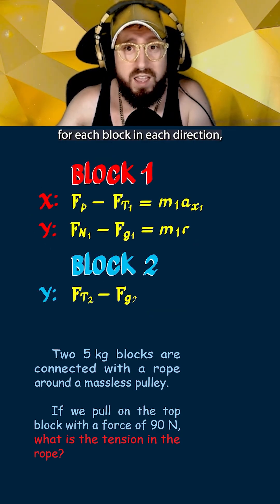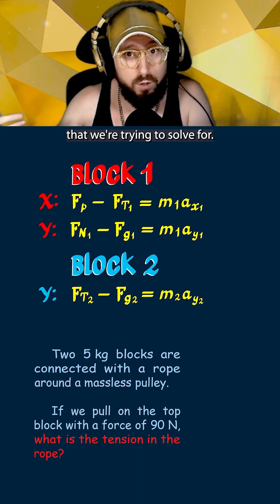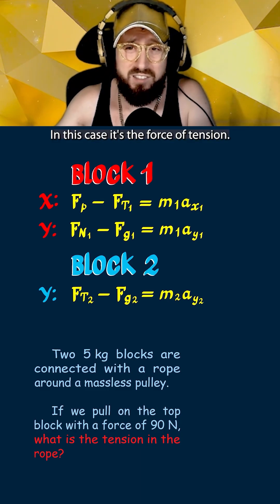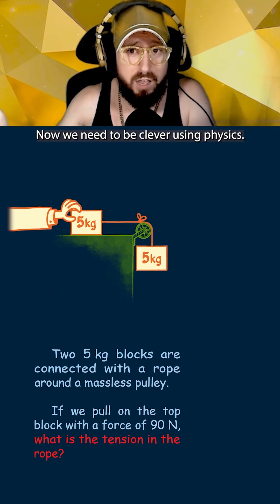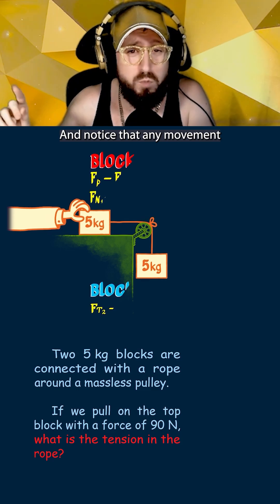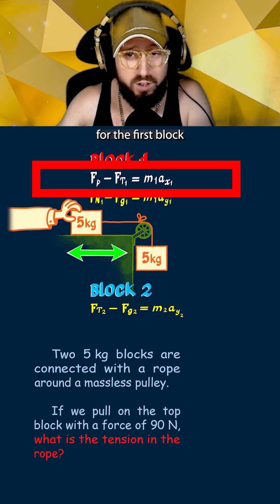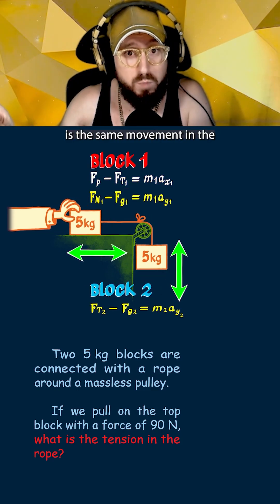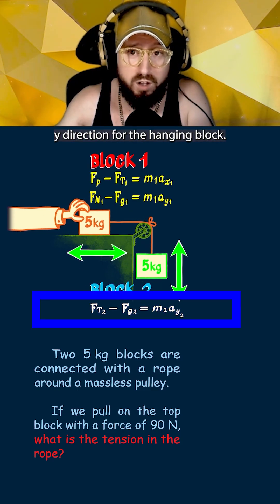Now we write out the sum of the forces for each block in each direction, and see where the variable is that we're trying to solve for — in this case, it's the force of tension. We need to notice that any movement in the x direction for the first block is the same movement in the y direction for the hanging block.